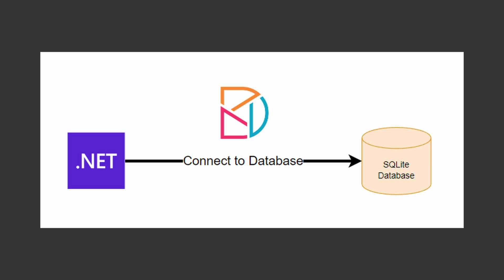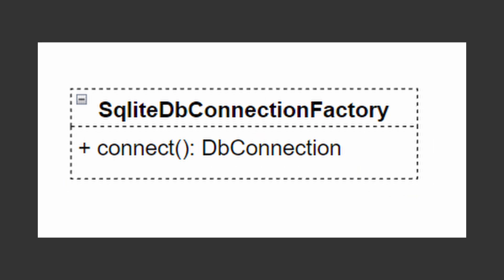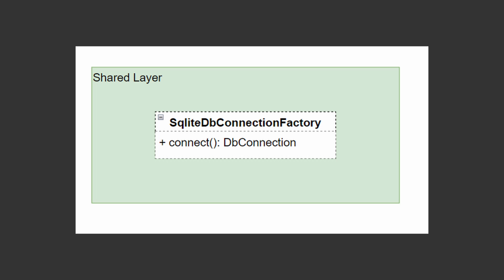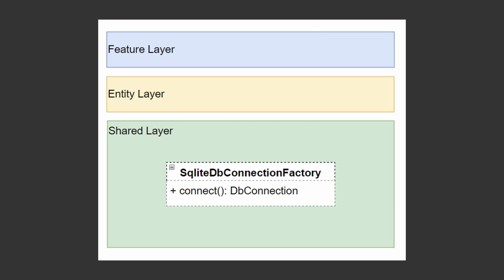The first thing we need to do is connect to our database. We're going to create a factory class that will create connections to our SQLite database, and this connection factory class can go in the shared layer. The reason it can go in the shared layer is because it's not related to our domain at all — it's application agnostic. Conveniently, the shared layer is the lowest layer in our vertical slice architecture application, so all the layers above it can leverage our connection factory to open connections to our database.